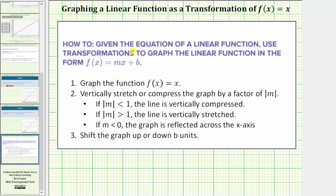So to graph a linear function in the form f of x equals mx plus b by using a transformation of the identity function: step one, we graph the identity function f of x equals x. Step two, we vertically stretch or compress the graph by a factor of the absolute value of m.